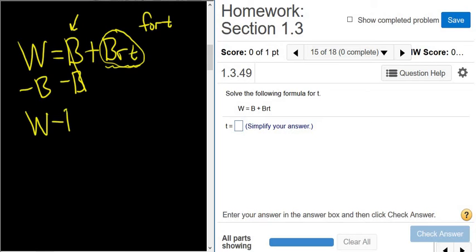So you get w minus b equals, and then you get brt. And we're looking for t, and it's being multiplied by b and r.